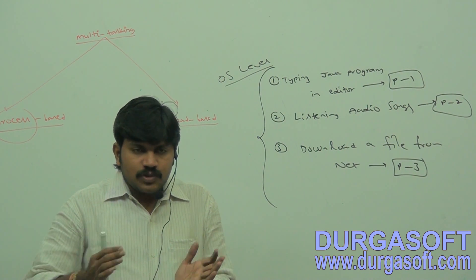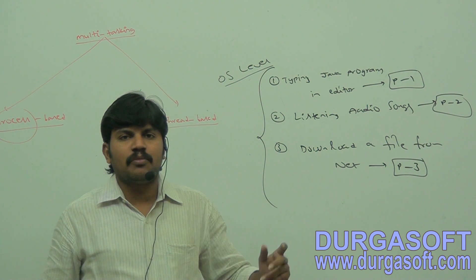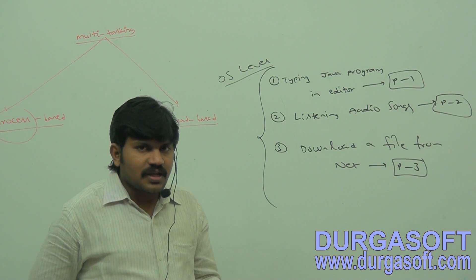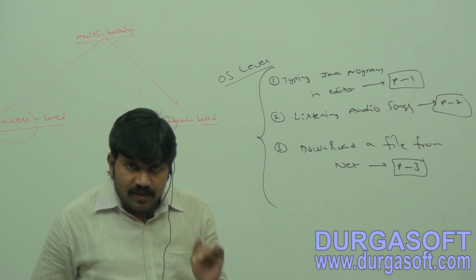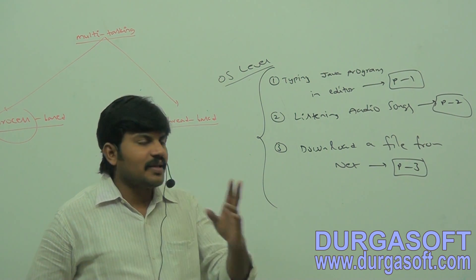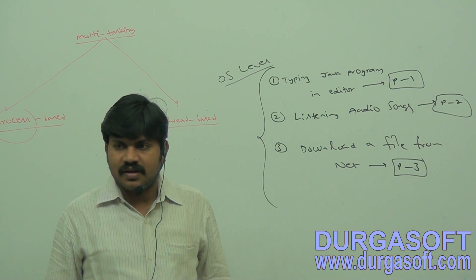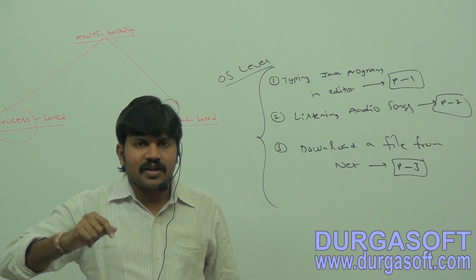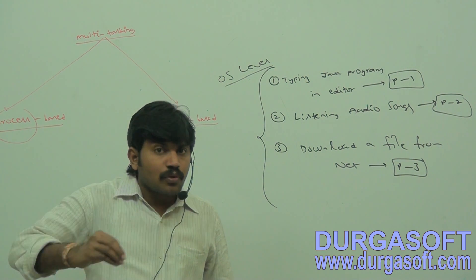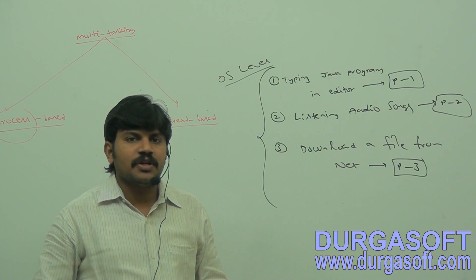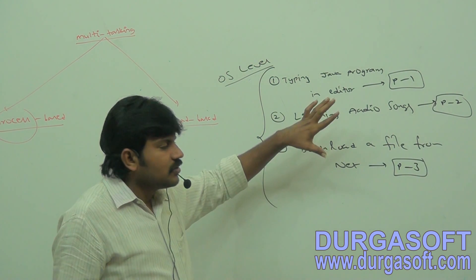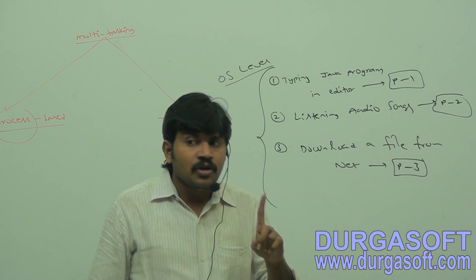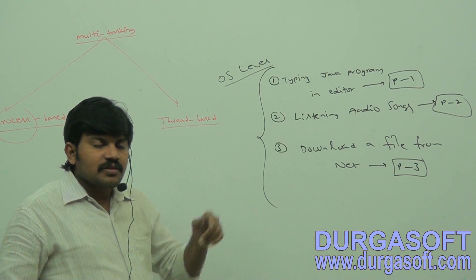Suppose a client asks what the specialities of Java are. If I tell him that while executing your program in the foreground, you can listen to MP3 audio songs in the background — the client would ask: what is the need of listening to MP3 songs? Is it part of my programming requirement? So these advantages cannot be highlighted at the programmatic level.